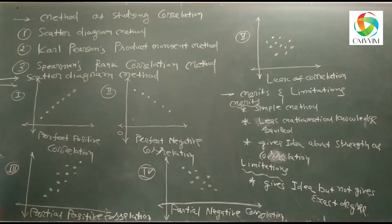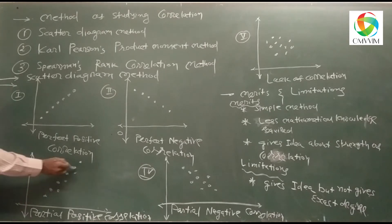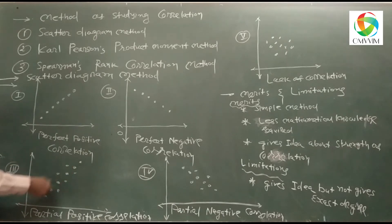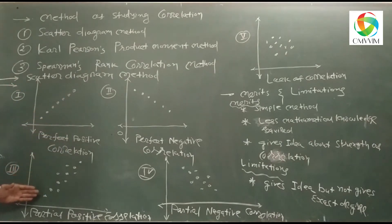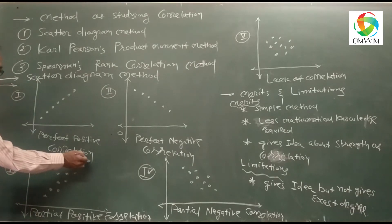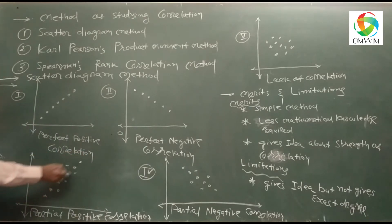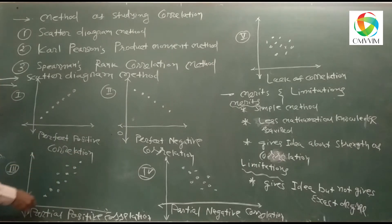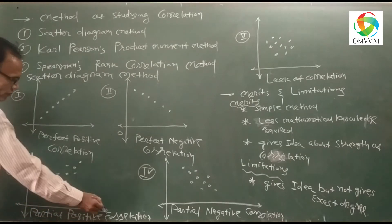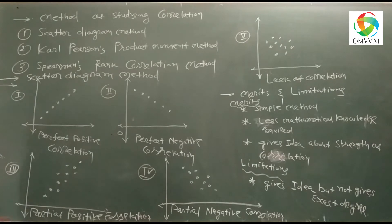The third figure: x and y observations are plotted on graph paper, and the points are not in one straight line but near to one straight line, going from left to right in increasing order. When points are around one straight line in increasing order, it is called Partial Positive Correlation.